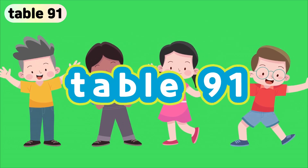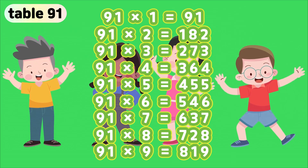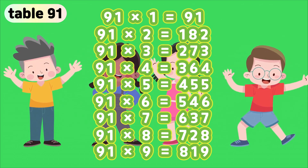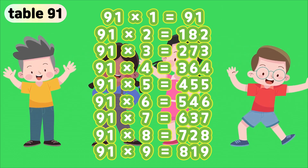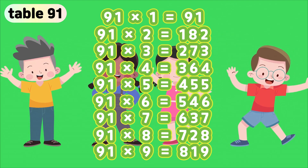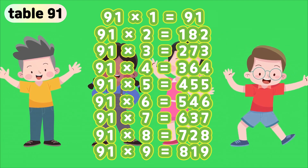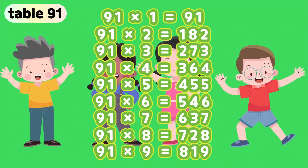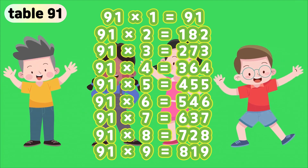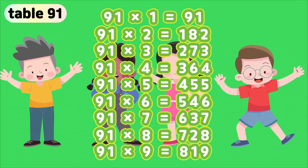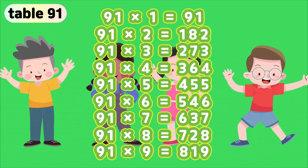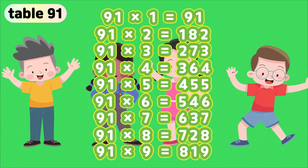Table 91. 91 times 1 is 91. 91 times 2 is 182. 91 times 3 is 273. 91 times 4 is 364. 91 times 5 is 455. 91 times 6 is 546. 91 times 7 is 637. 91 times 8 is 728. 91 times 9 is 819.